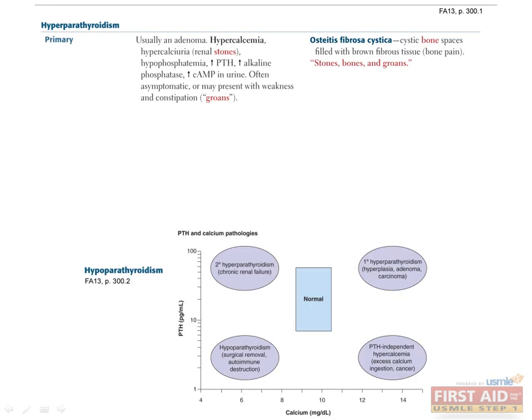Moving on to the parathyroid, we'll start with hyperparathyroidism and describe its primary, secondary, and tertiary forms. Hyperparathyroidism is associated with the classic mnemonic stones, bones, and groans for the typical symptoms of calcium kidney stones, osteoporosis, and muscle soreness and constipation. Patients typically complain of weakness, fatigue, low appetite, and often have depression or other psychiatric issues. Primary hyperparathyroidism is usually caused by a parathyroid adenoma, which can be uniglandular or multiglandular, or less frequently by gland hyperplasia.